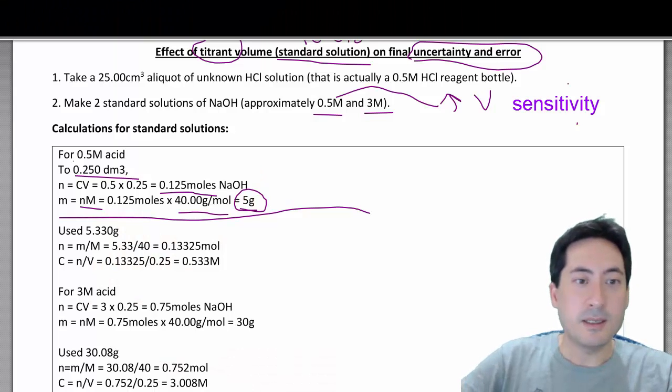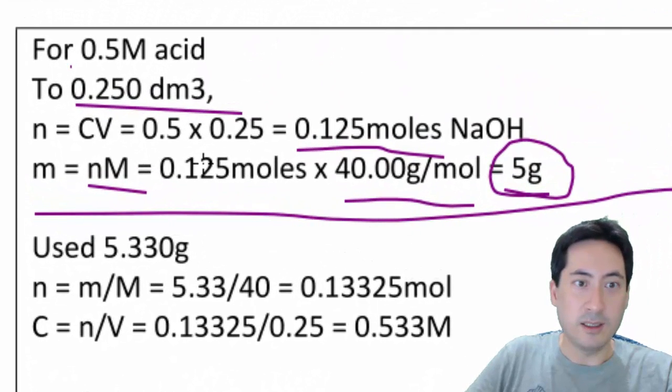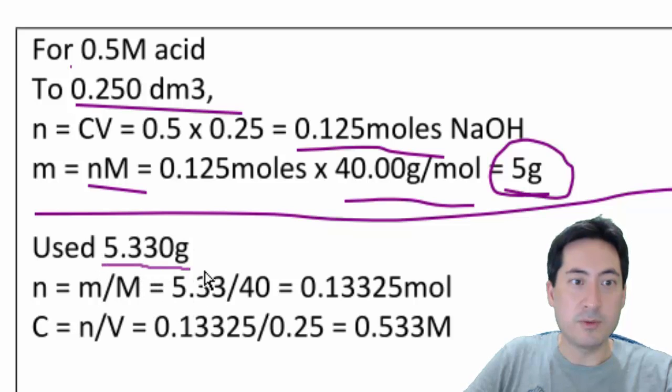So going back to these calculations now, so what I ended up using, because they were pellets, you can't get exactly 5 grams. So I probably could have got closer to 5, but I put 5.33 down here that I got on the scale.